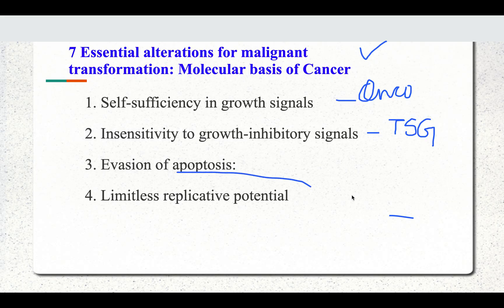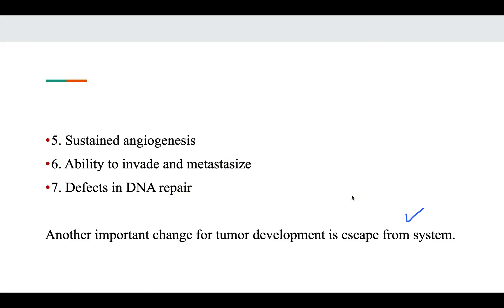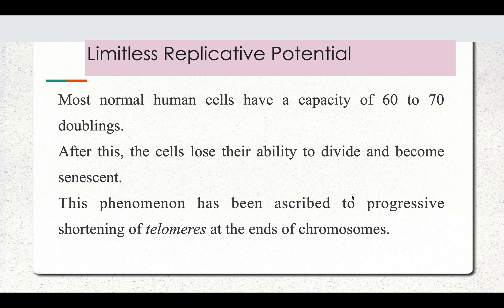Firstly we will cover limitless replicative potential in this video. Normal human cells have the capacity to multiply 60 to 70 times. After this, the cells lose their ability to divide and they become senescent. This process is ascribed to the telomeres.